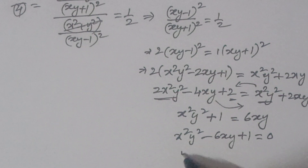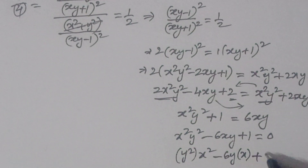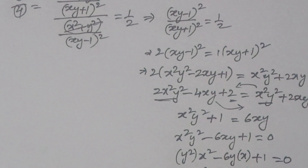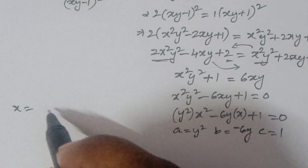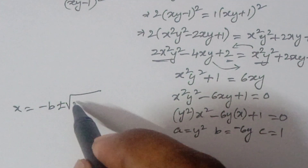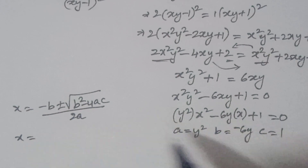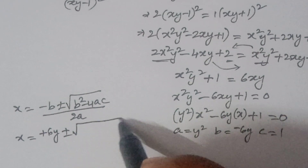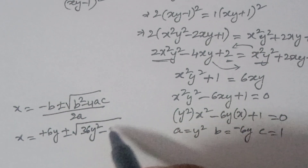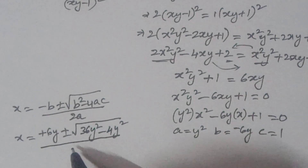Treating xy as a variable, it's a quadratic: y^2·x^2 - 6y·x + 1 = 0, with a = y^2, b = -6y, c = 1. Applying the quadratic formula: x = (-b ± √(b^2 - 4ac)) / 2a = (6y ± √(36y^2 - 4y^2)) / 2y^2.